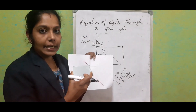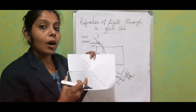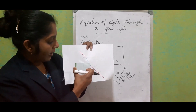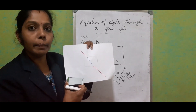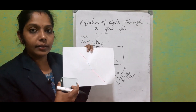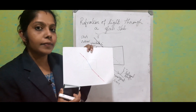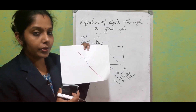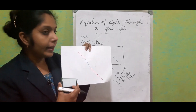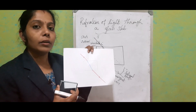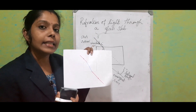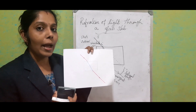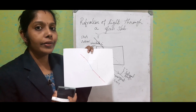You will study this in more detail in 10th standard. There is a shift — a particular distance between the incident ray and the emergent ray. We call this as shift or lateral shift. This is called lateral shift.